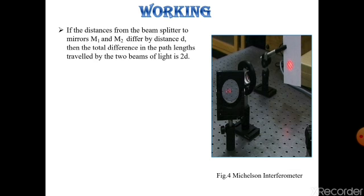If the distance from the beam splitter to the mirrors M1 and M2 differ by the distance d, then the total difference in the path length traveled by the two beams of light is 2d.